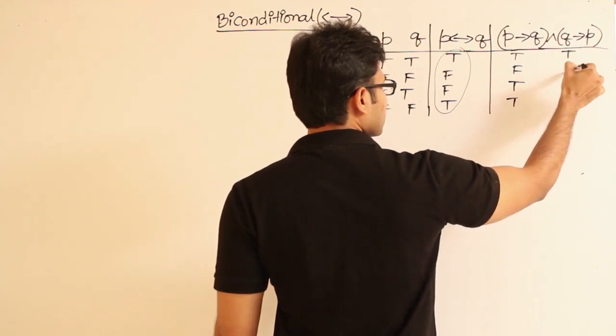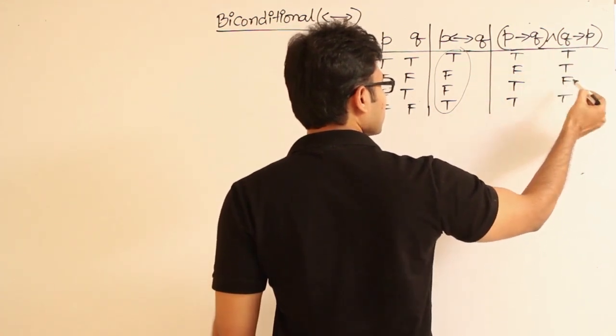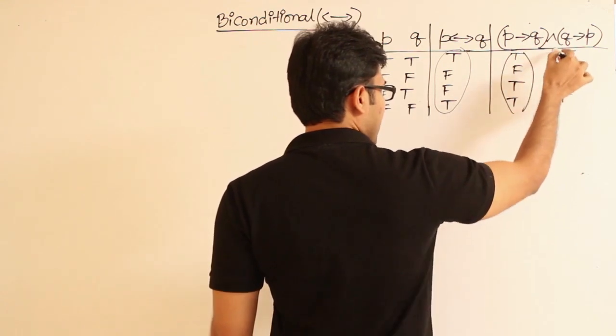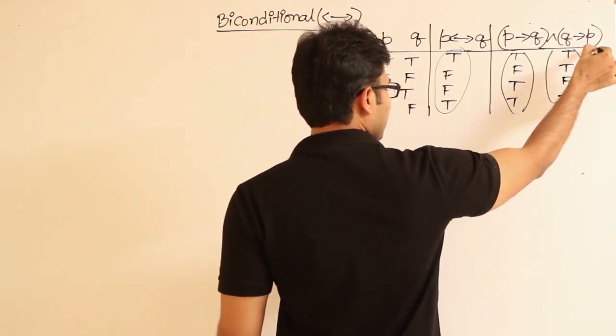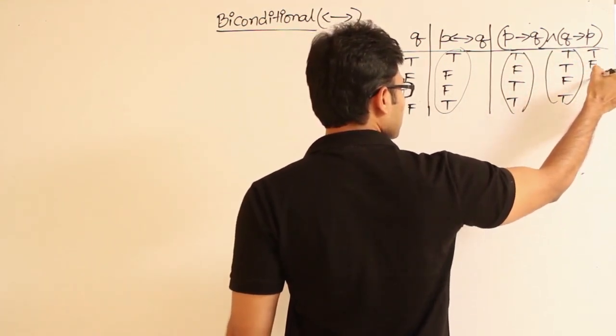It is true, true, false, true. And now if you take AND of these two, then we are going to get true, false, false, true.